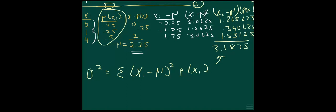If you want to get the standard deviation, then you just take the square root of the variance. That would come out to be 1.785 — I'll round it — 1.785 would be the standard deviation. That's how to compute the mean, the variance, and the standard deviation for a probability distribution.